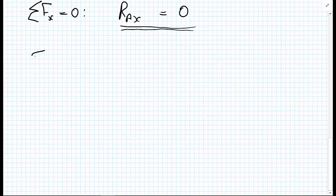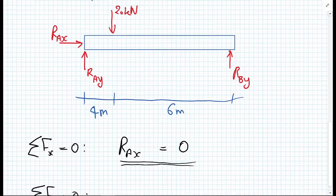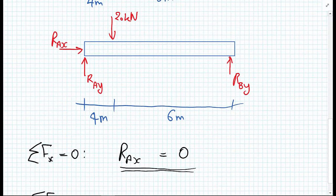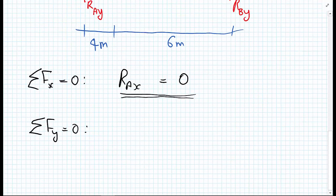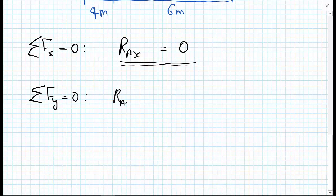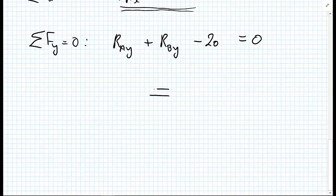So that value is known straight away. We'll now develop our second equation of equilibrium. Sum of the forces in the Y direction must be equal to 0. And looking back at our free-body diagram, we have a couple of ways we can write this. I'm going to do this two ways. So first of all, we can write it assuming that pointing upwards is positive, pointing downwards is negative. We can go R A Y plus R B Y minus 20 equals 0.